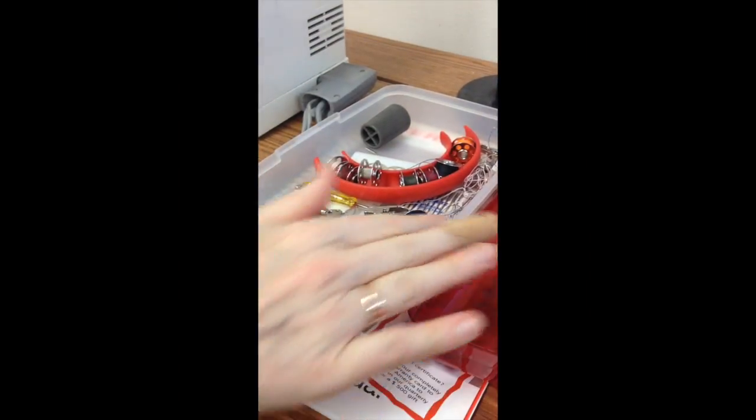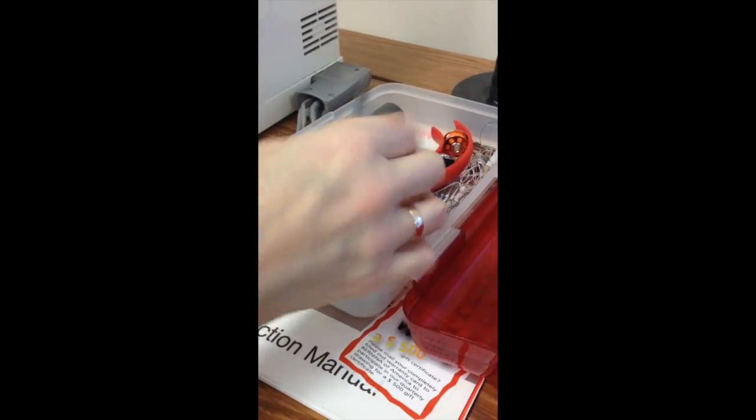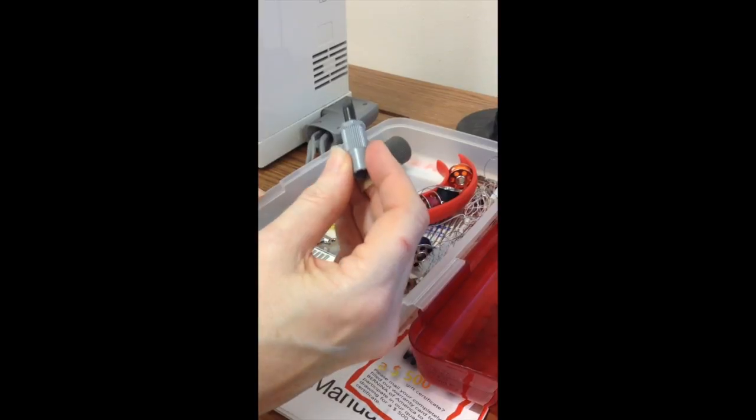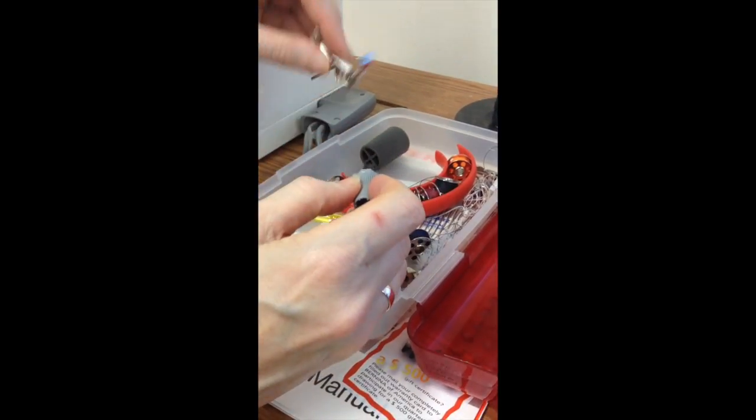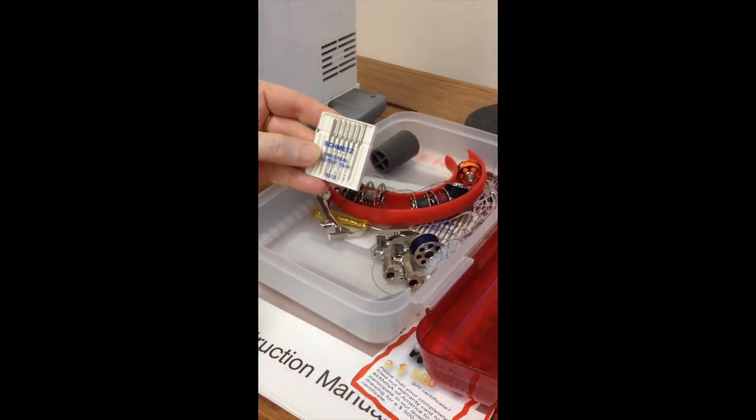To the right of the machine is a plastic box with all of the extra bobbins, the screwdriver that you use to change the needle, extra presser feet and the extra needles themselves.